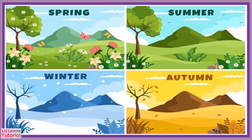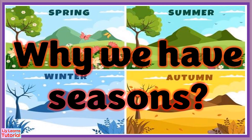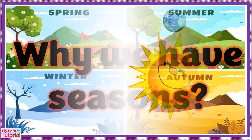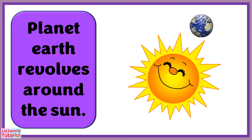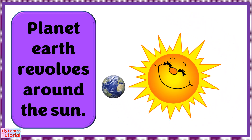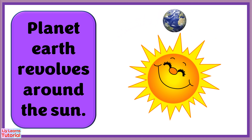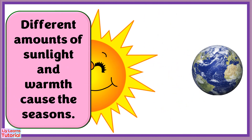But why do we have seasons? Planet Earth revolves around the sun. Earth is tilted, so as it revolves, areas of Earth get different amounts of sunlight and warmth.